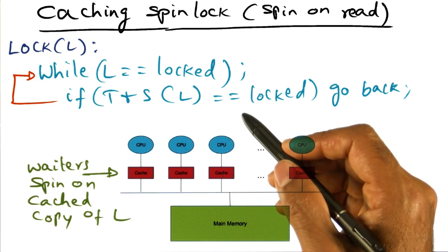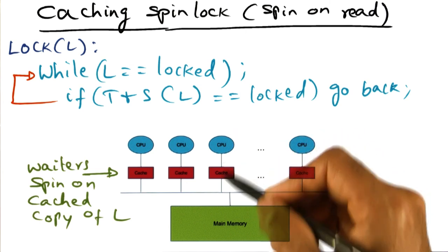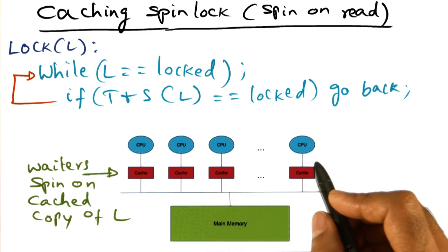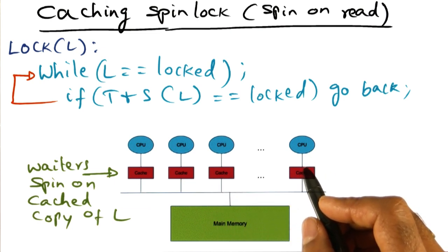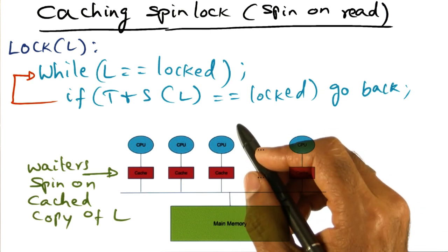And obviously this is impeding that one guy that got the lock and can actually get some useful work done. And this is clearly disruptive. And earlier, one of the things that we said is that we want to avoid or limit the amount of disruption to useful work that can be done by the processor that acquired the lock.